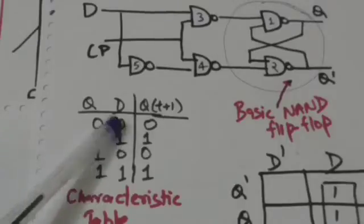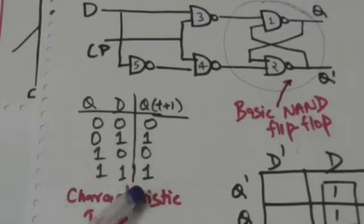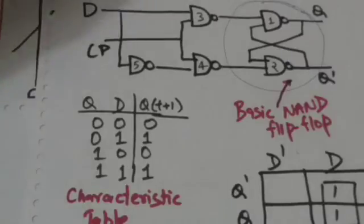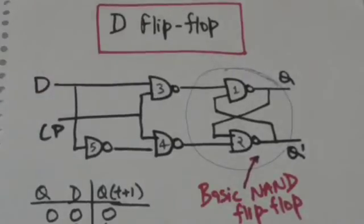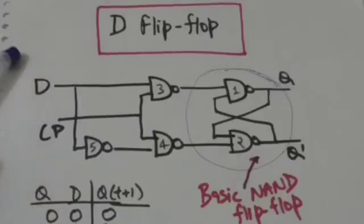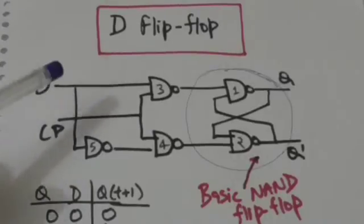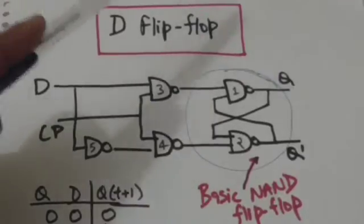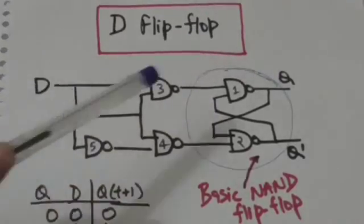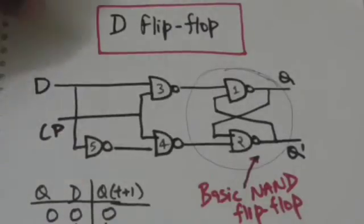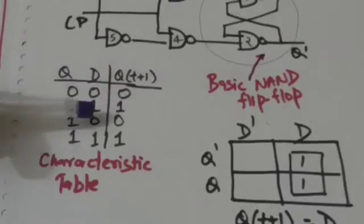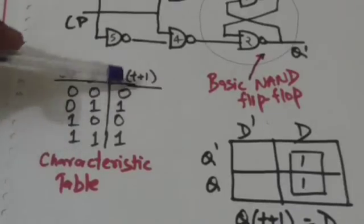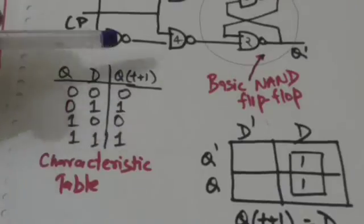Similarly, when D equals zero during the occurrence of clock pulse, the output of gate three will be one and the output of gate four will be zero. It will switch the flip-flop to clear state. So when D equals zero, the next state of the flip-flop will be zero.